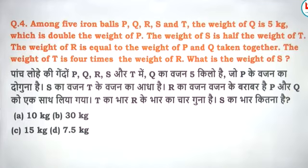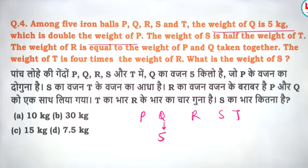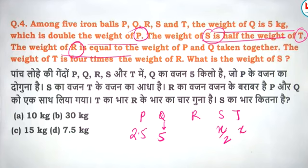Next, among five — P, Q, R, S, T — and which is double the weight. Weight is half weight. T's weight equals the rate of P and Q, R — so 7.5 R.